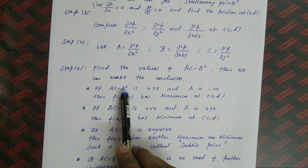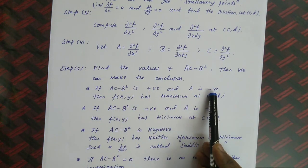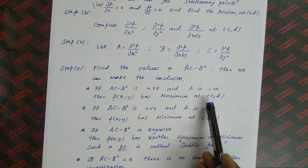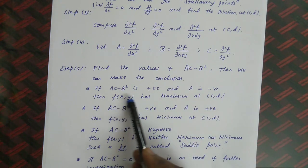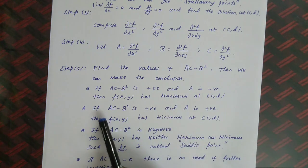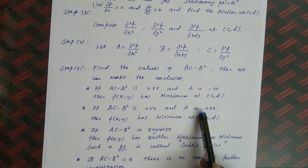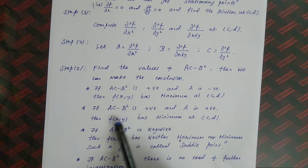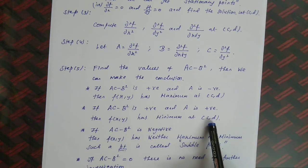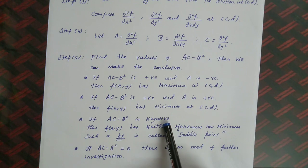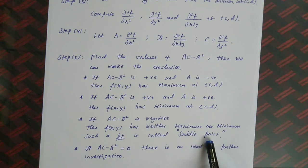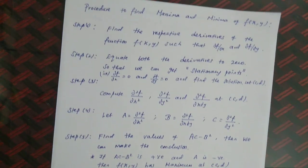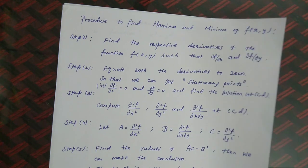If AC − B² is positive and A is negative at the point, the function has a maximum there. To find the maximum value, substitute the point into the function. If AC − B² is positive and A is also positive, the function has a minimum at (c, d); substitute the point to get the minimum value. If AC − B² is negative, the point is called a saddle point. If it equals 0, no further procedure is needed.